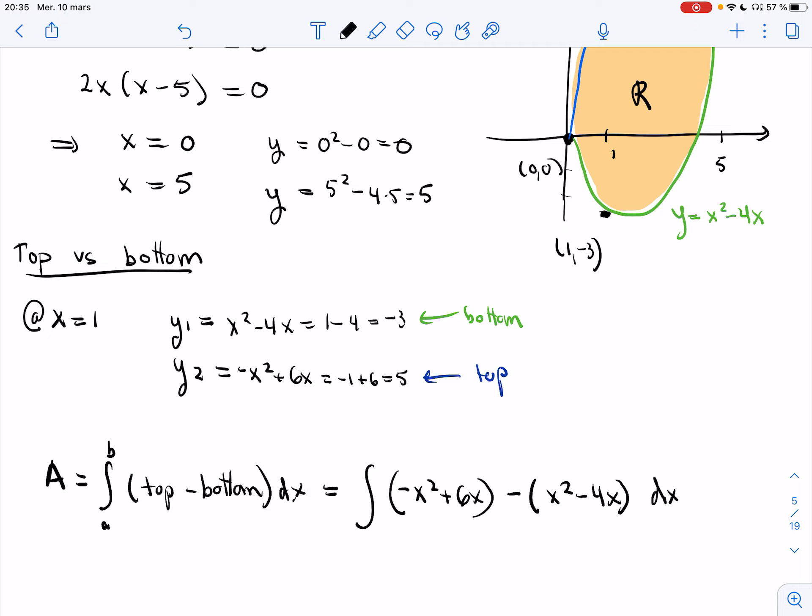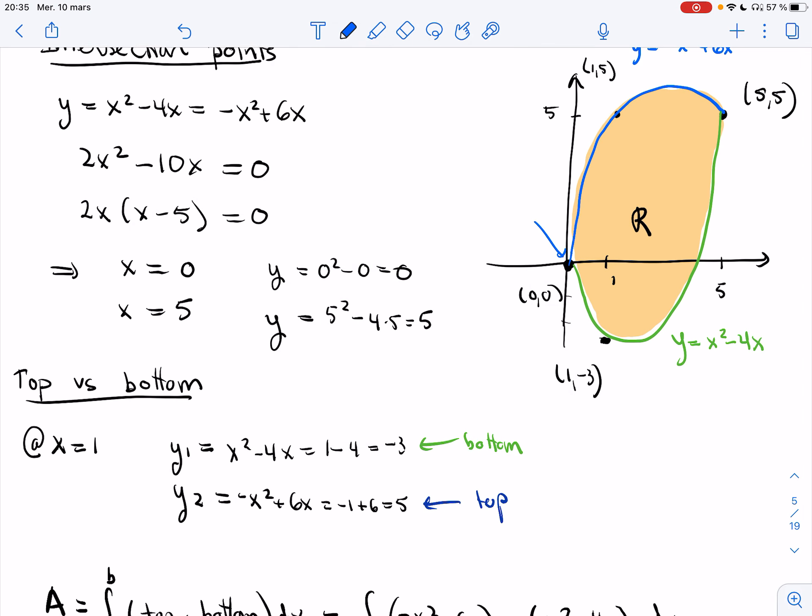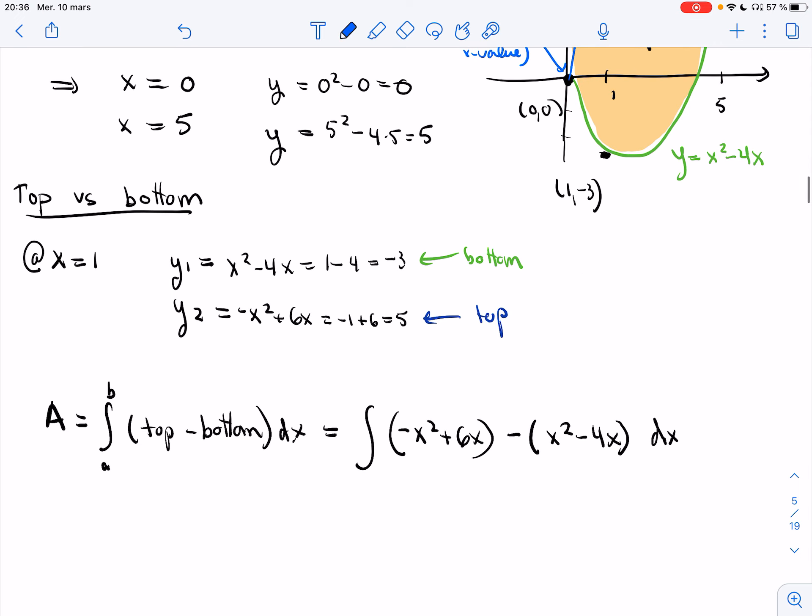And then I have to figure out what A and B are. A is going to be the smallest x value. So here, that's the smallest x value. And then B is 5 biggest x value for the whole region. Right, so I go from 0 to 5. And so that's going to be my A, that's going to be my B. So from 0 to 5, and that's the integral.